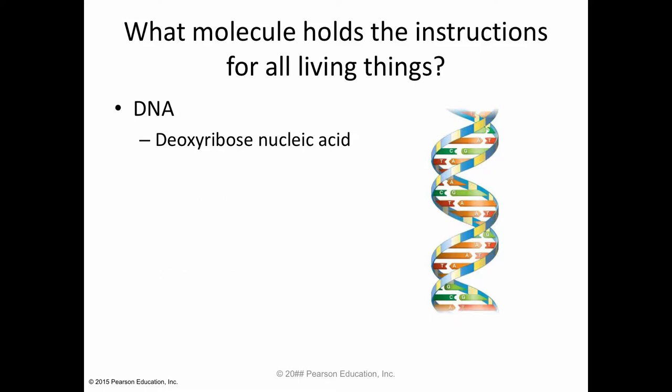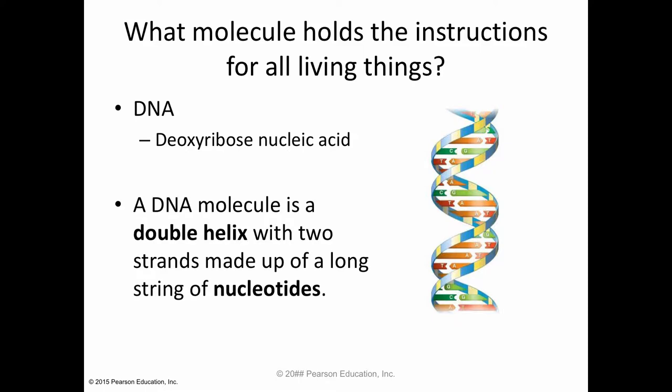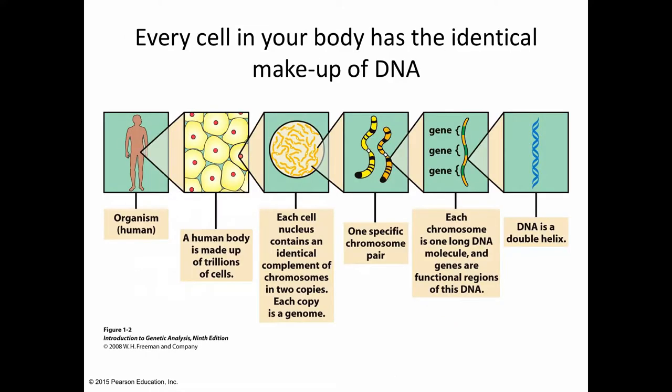The structure that the DNA molecule takes is referred to as a double helix, and it's analogous to a spiral staircase. That double helix is made up of two strands of nucleotides. A nucleotide is the basic building block of the nucleic acid — I'm going to show you a picture of a nucleotide in a minute.